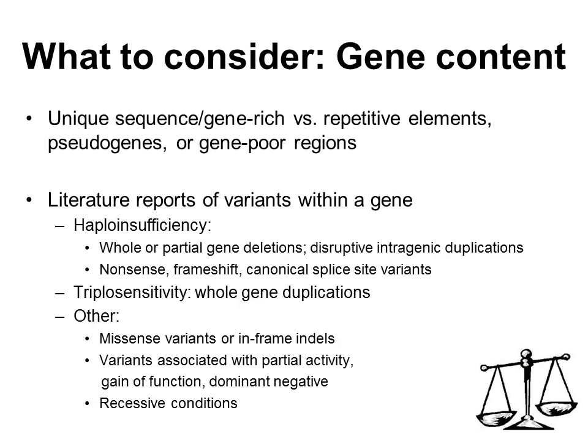It stands to reason that the gene content within a region would play a big role in the clinical impact of the CNV. Some regions of the genome are gene-rich, while others are gene-poor or contain only repetitive elements. Therefore, a relatively small CNV of a gene-rich region may be considered more likely to be pathogenic than a larger gene-poor region. The laboratory should be looking to the scientific literature for any evidence of previously reported pathogenic variants in any of the genes within a CNV to understand whether a deletion or duplication of that gene would lead to a similar phenotype.